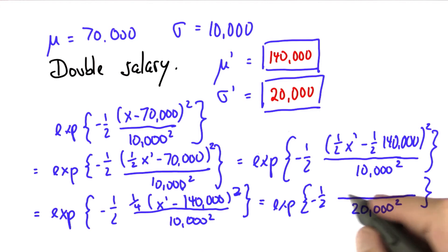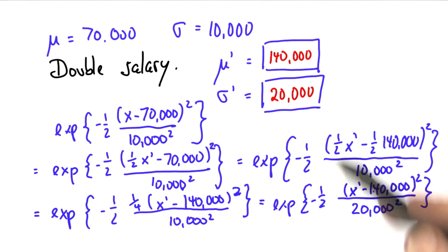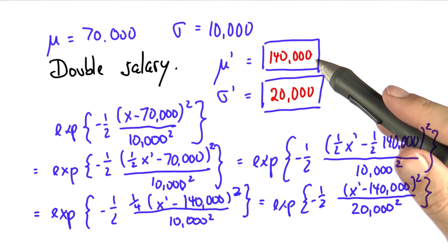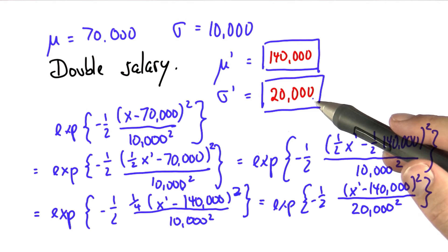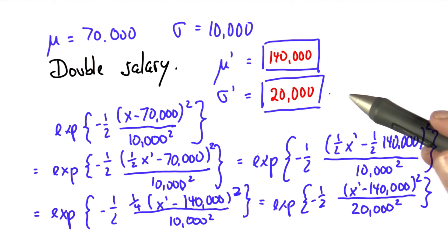So this transformation shows that doubling the salary doubles the mu, but also doubles the sigma. It doubles the standard deviation of those salaries. I've proven it to you.